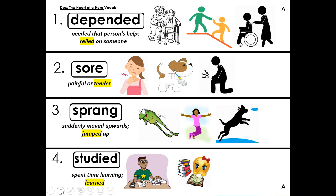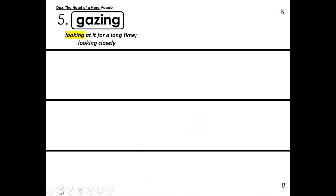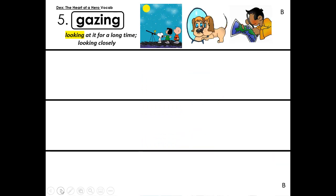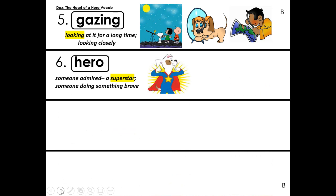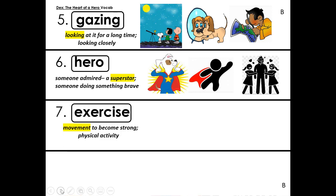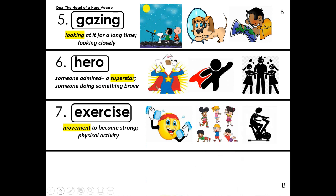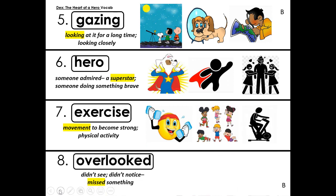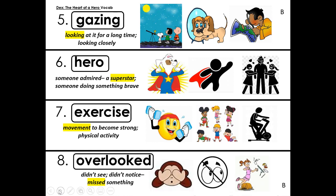Studied: spent time learning. Another word for studied is learned, or even to read. Gazing: looking at something for a long time, looking closely — gazing means looking. Hero: someone admired, a superstar, someone doing something brave. Exercise: movement to become strong, physical activity. And overlooked: didn't see, didn't notice, missed something — overlooked means missed.